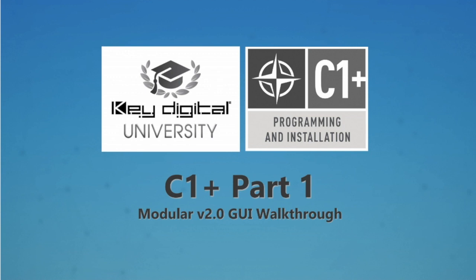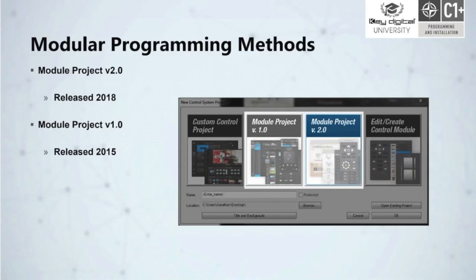Welcome to KeyDigital's Compass Control Professional online certification course. This is level C1 plus, where we will introduce and provide many examples of programming and installation utilizing the modular drag-and-drop programming methods. Here in C1 plus part 1, we will be emphasizing the modular version 2.0 GUI and walk through that GUI so you have full understanding of what it will look like for your clients, helping you qualify if it is the correct GUI to deploy on your next installation.